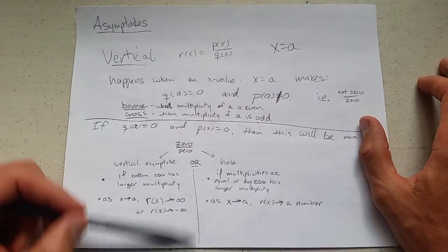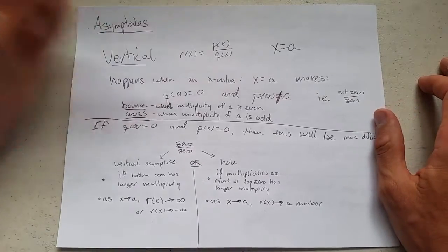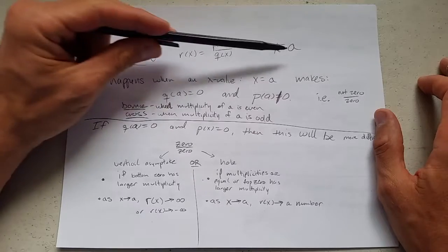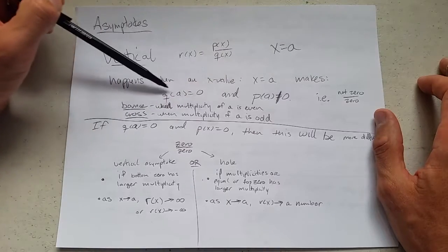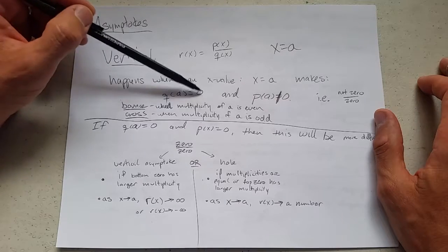So vertical line, here's an example, that's a vertical line, and your x value is going to be the same. And you need to make sure this a makes q of x equal to 0. So when you plug in a, you should get q of a equals 0.